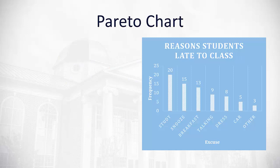One such format might be a Pareto chart, which works really well if you have categories. For example, on the right here I took a survey of my late students to ask them what was their excuse for being late to class.